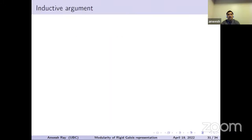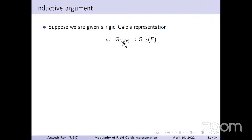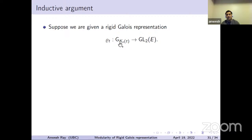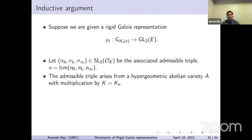In order to establish modularity, we must show that these hypergeometric abelian varieties are modular — assuming the modularity lifting conjecture. Here is the inductive argument Darmon uses. Starting with a rigid Galois representation, we can assume up to twist that it is defined on K_N(T). The triple sigma_0, sigma_1, sigma_infinity consists of monodromy matrices in SL_2(O_E), and N is the LCM of the orders of their semisimplifications. This representation arises from a hypergeometric abelian variety A with real multiplication by K_N.